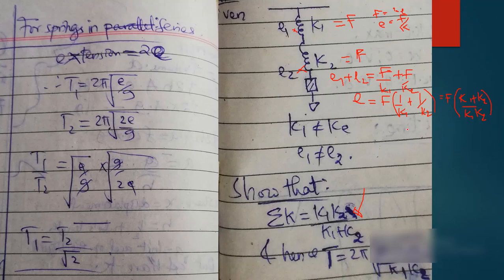Finally, if we rearrange our equation, we need to make k the subject. We have F over e equals k1 times k2 over k1 plus k2. Just simple - F over total e, total restoring force over total extension, equals the summation of k. Hence, it is shown, as simple as that.